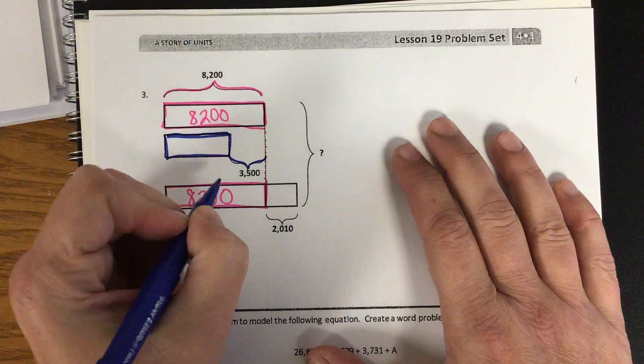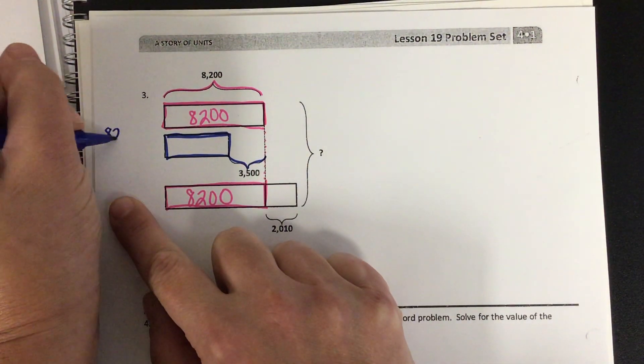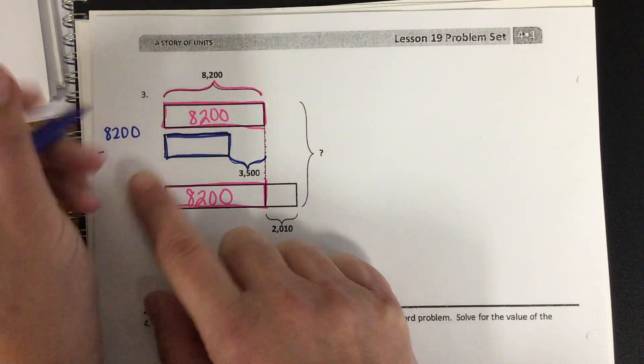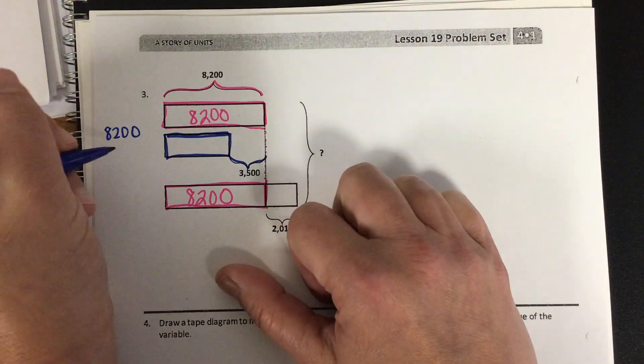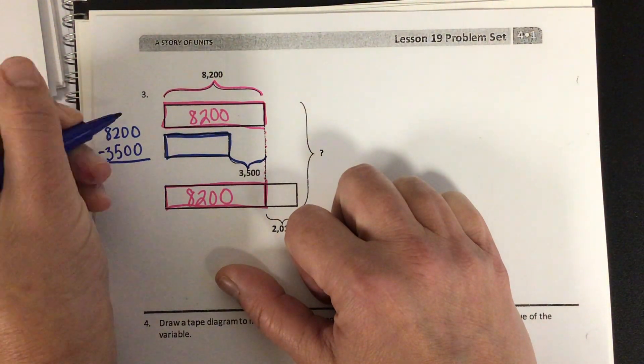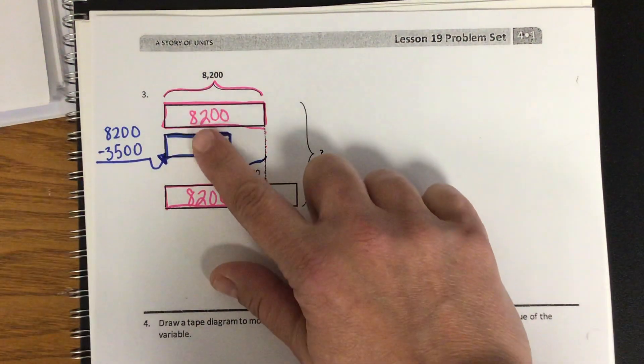Well, this information is told right here. So it's going to be this 8,200 minus, it's going to be fewer, 3,500. So I have to do this math in order to find this tape diagram.